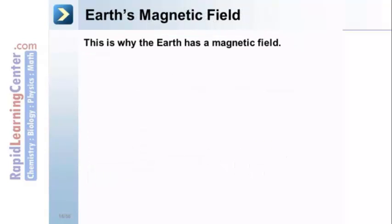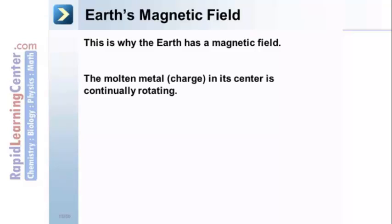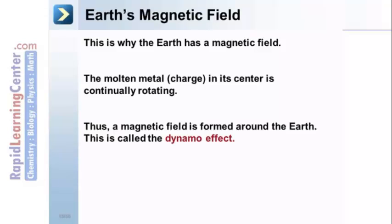Earth's magnetic field. This is why the Earth has its own magnetic field. The molten metal charged material in its center is continually rotating. Thus, a magnetic field is formed around the Earth due to the movement of this charged material. This is called the dynamo effect.